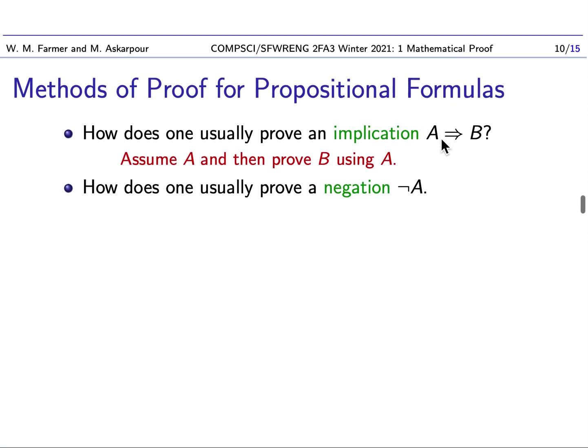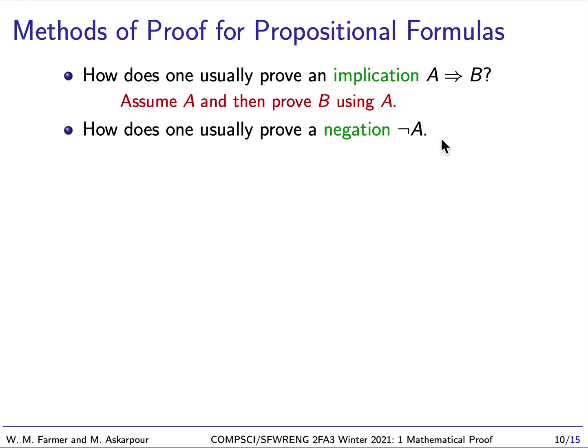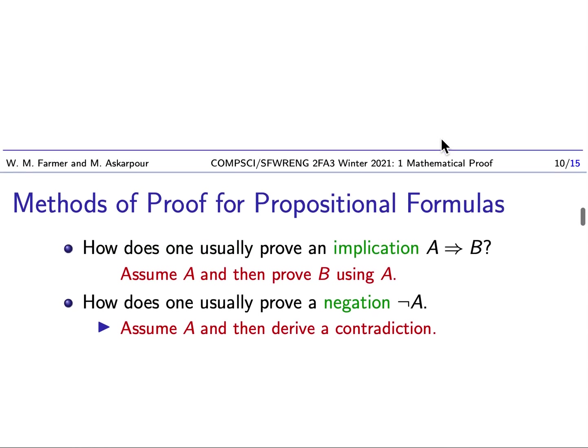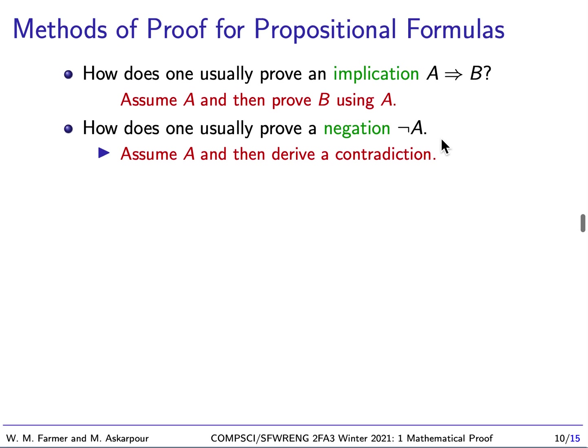Okay, the second case is how does one prove a negation? Prove that something is not true. We could just try to prove it directly. But another approach, a very common approach, is that we assume A, and then try to derive a contradiction. So we basically show if A is true, then we're going to have a contradiction. So A can't possibly be true. So the negation of A must be true.